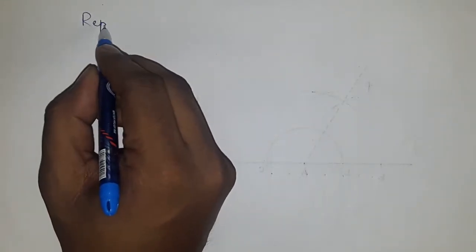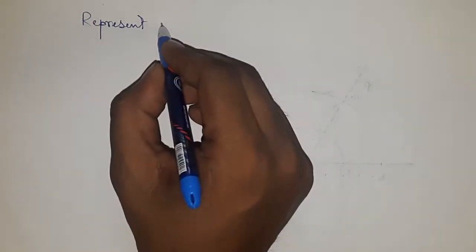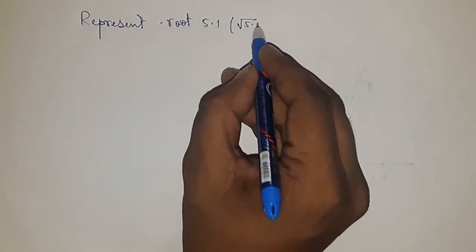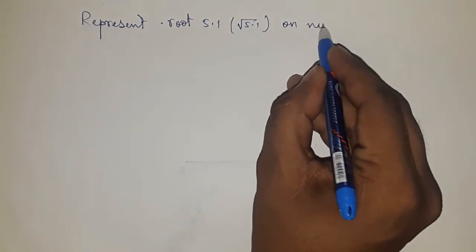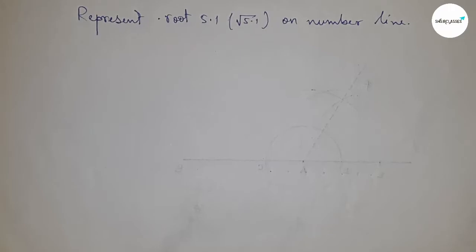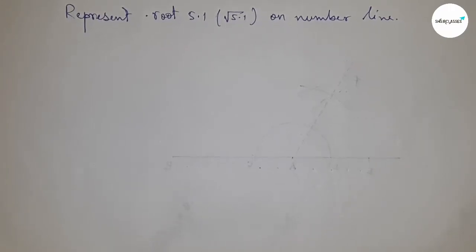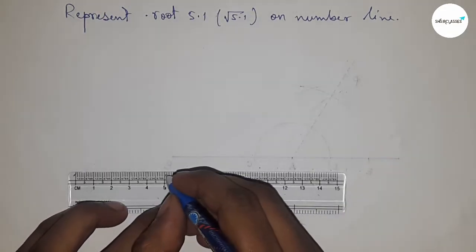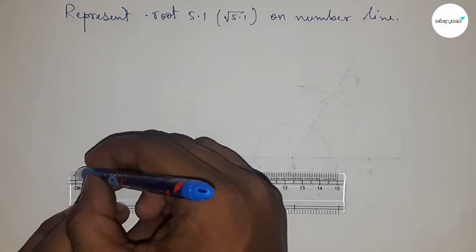Hi everyone, welcome to SSR classes. Today we're talking about the representation of √5.1 on a number line. Before starting the video, I have one request: please subscribe to the channel and press the bell icon.